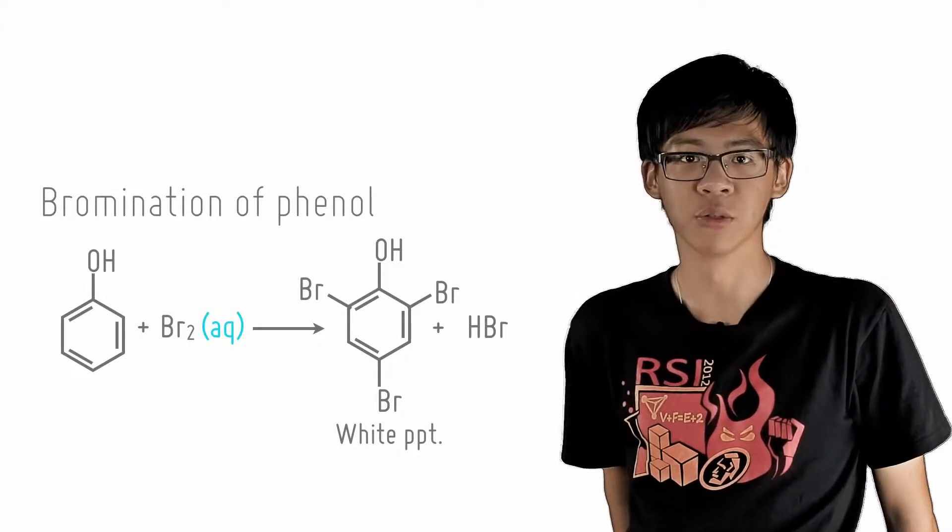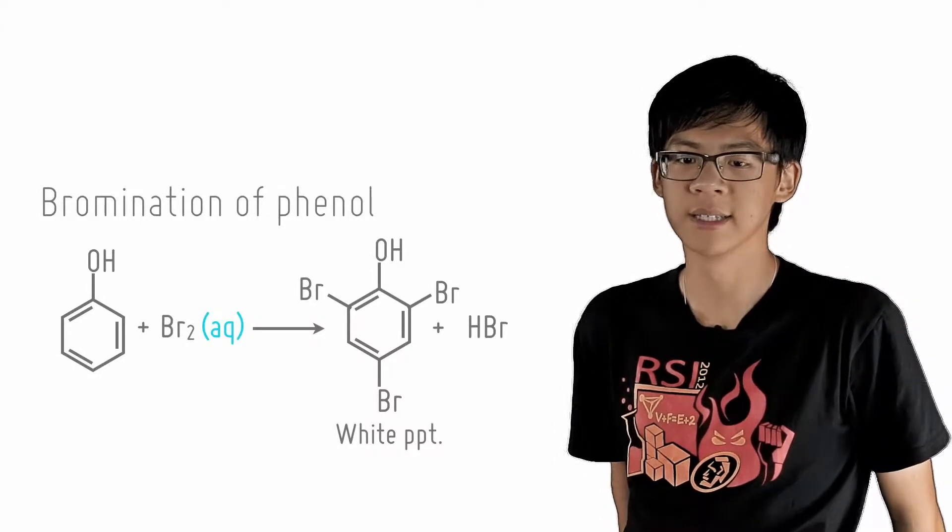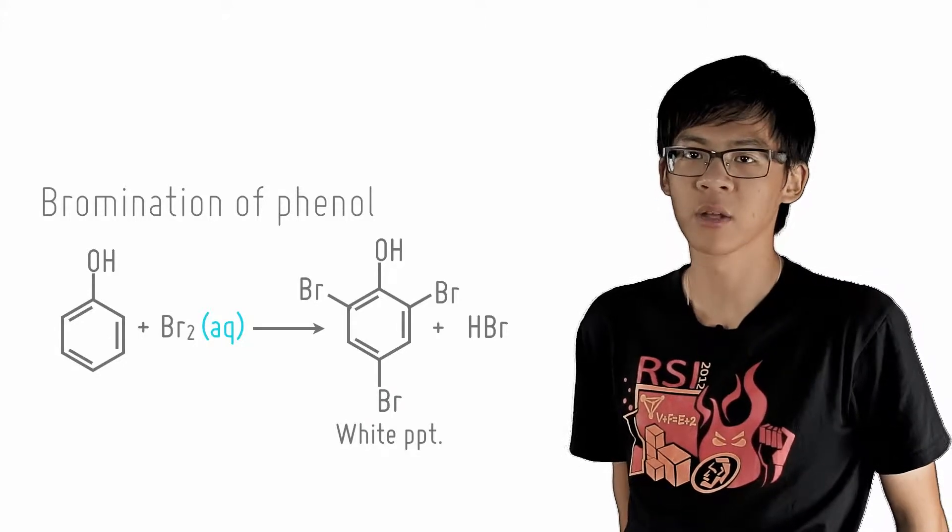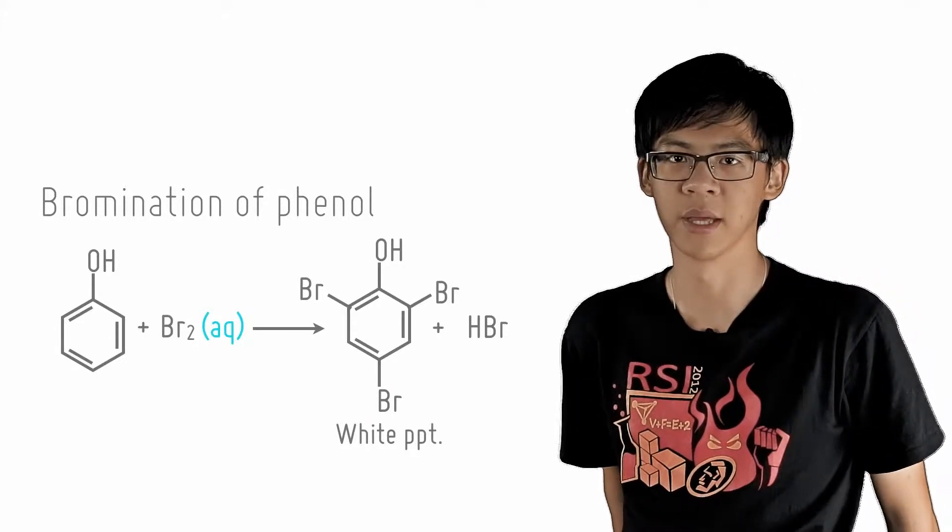Note the poly-substitution. Three bromine atoms are easily substituted. The product 2,4,6-tribromophenol will form as a white precipitate.